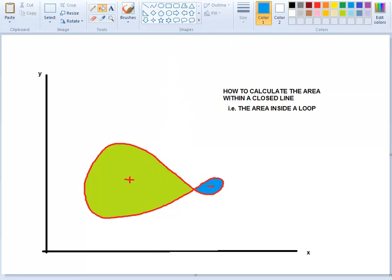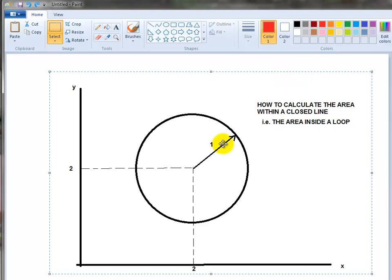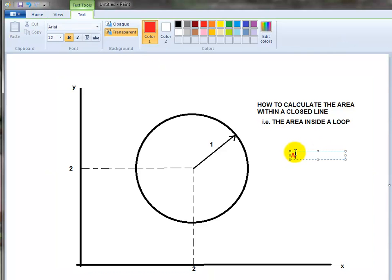I'll show you how to do that using Excel. Let's get rid of that one and start with a simple circle. I'll show you that it works for this. The area of a circle is πr².